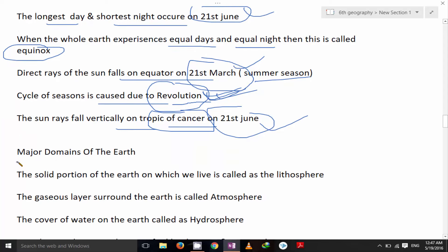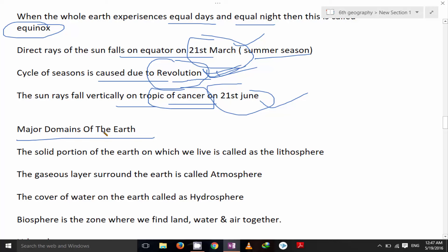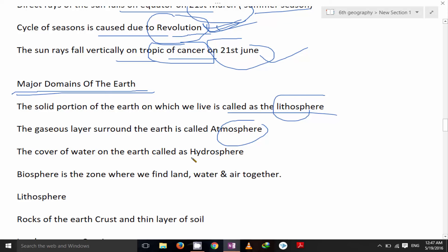Major domains of the earth. The solid portion of the earth on which we live is called lithosphere. The gaseous layer surrounded the earth is called atmosphere. The cover of water on the earth called hydrosphere. Lithosphere made up of land, gaseous layer is atmosphere, and hydrosphere is water. Biosphere is the zone where we find land, water, and air together.